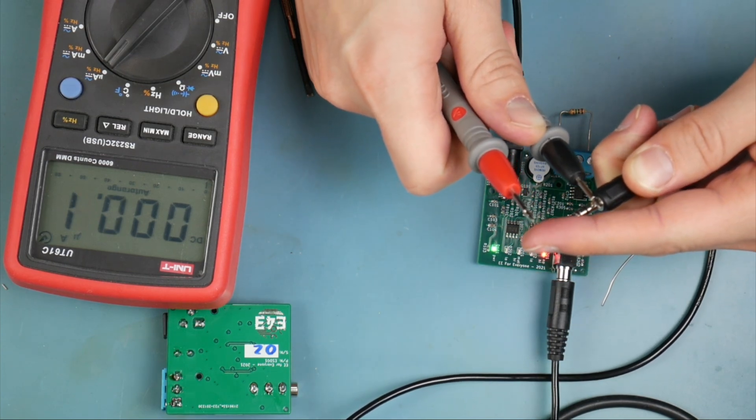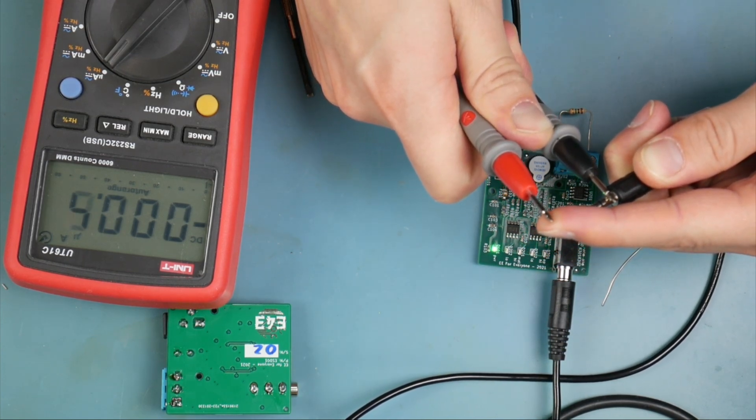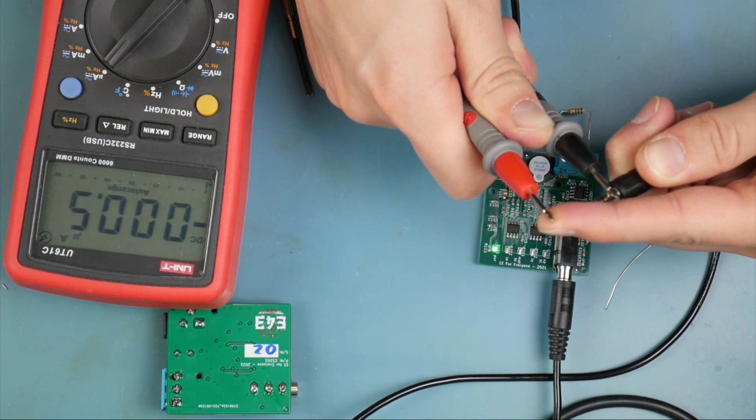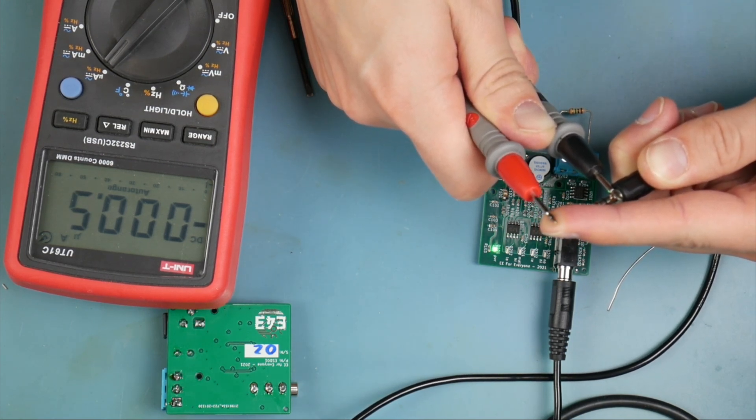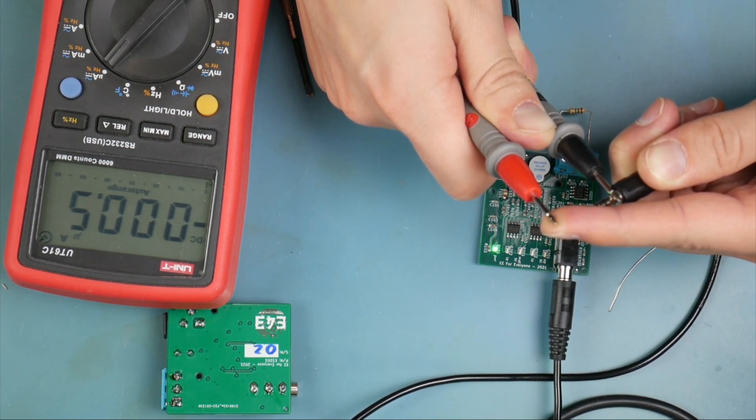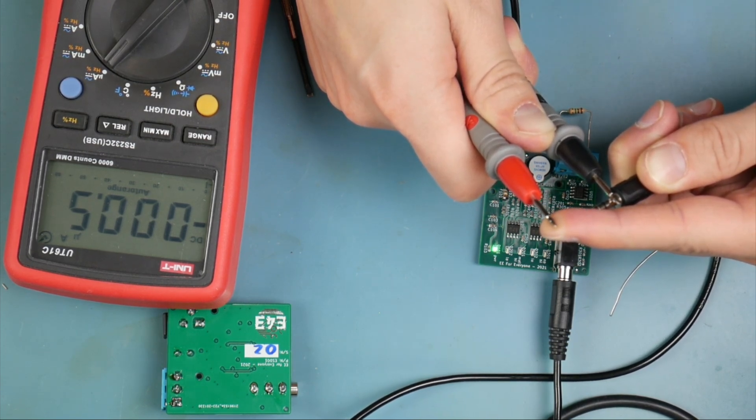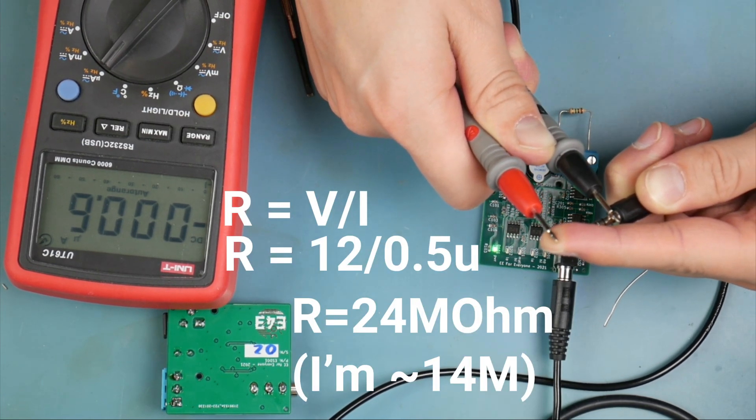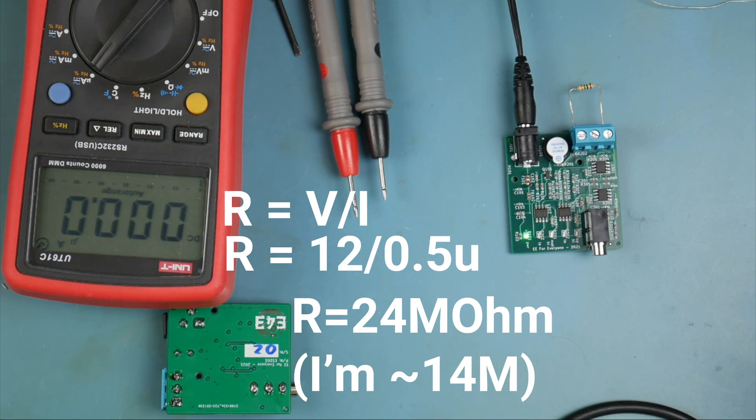Now, what if I... Wow. So my resistance right now, it dropped to half a microamp. Half a microamp, 12 volts. Man, so hard. Uh, sweet. Wait a minute.